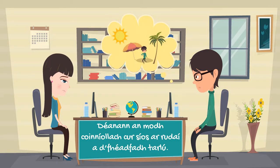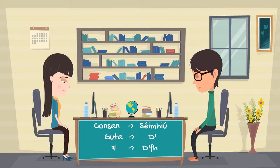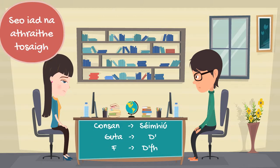First things first. Just like the aimsir chaite, the Módhcoinníollach puts an athrú tosaigh, or frontal change, on the verb. And the best part is the frontal changes are the same as in the aimsir chaite. Verbs that start with a consanant take a séimhiú. Verbs that start with a vowel take a d-apostrophe before the vowel. And verbs that start with an F change to d-apostrophe F-H. This always happens with regular verbs, regardless of the number of syllables.